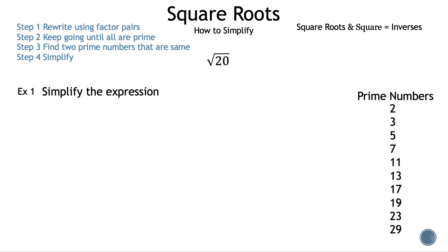The first step is to find a factor pair of 20. A factor pair is just two numbers that multiply to the original number, in this case 20. The factor pair we're going to work with is 2 and 10. There are other factor pairs, but 2 is a prime number and we want all the numbers to be prime. Another way to look at it: 20 is even, so we can divide by 2 and keep dividing until all the numbers are prime.